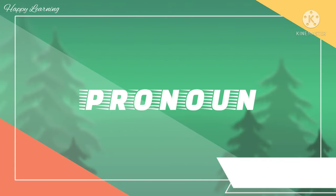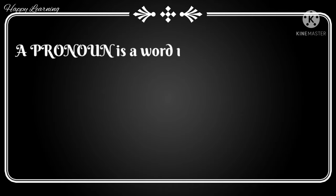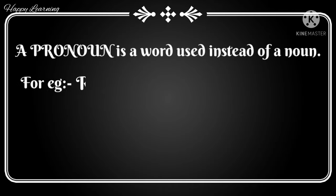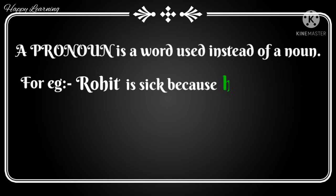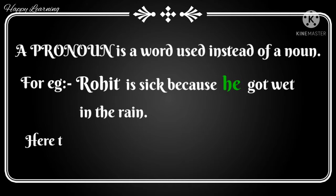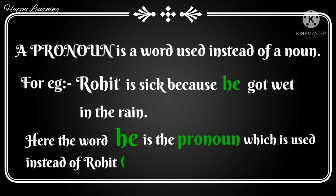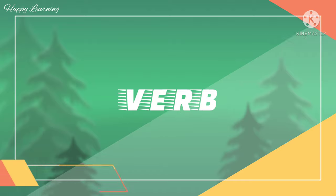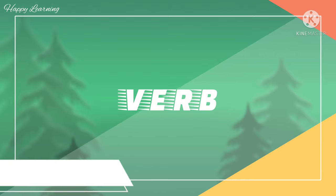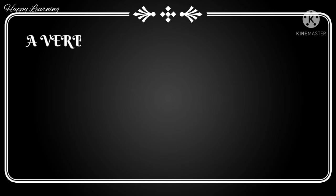Second comes the pronoun. A pronoun is a word used instead of a noun. For example, 'Rohit is sick because he got wet in the rain.' Here the word 'he', highlighted in green, is the pronoun used the second time in the sentence instead of 'Rohit', which is the noun.